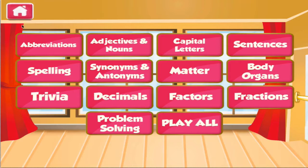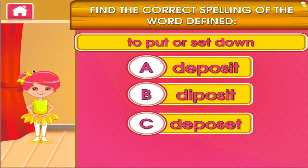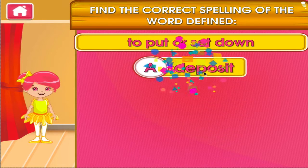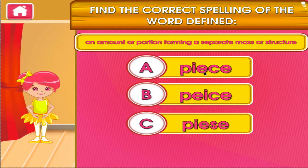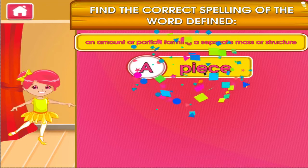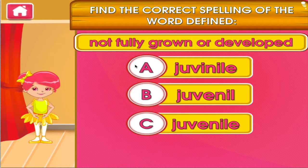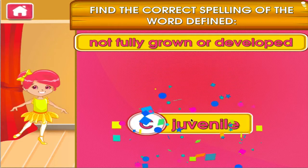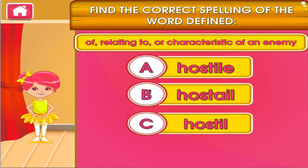Choose the activity you want to play. Spelling. Tap the correct answer. You're good at this! Tap the correct answer. Great job! You got it right! Tap the correct answer. Good job! That's another right! Tap the correct answer.